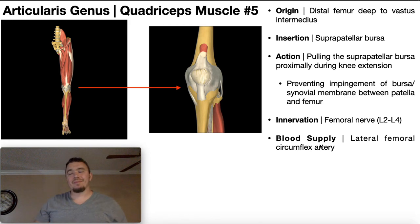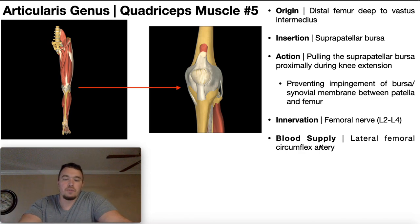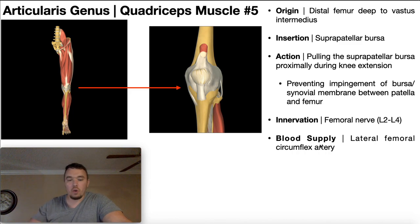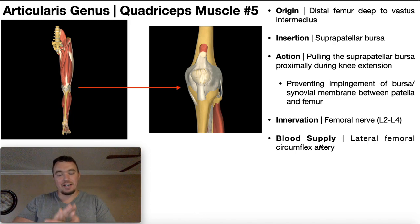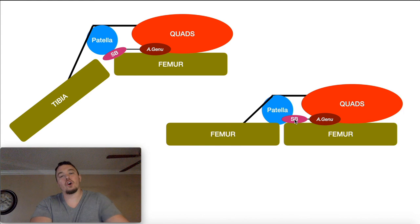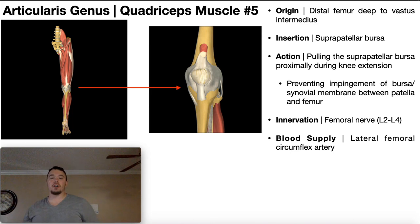To summarize: the four major quadriceps are responsible for knee mobility and extension. But during knee extension as we approach full extension at 180 degrees, we enter the closed-packed position where everything is tight. Without articularis genus, the suprapatellar bursa would become impinged underneath the patella. This muscle simply pulls that bursa proximally over a short distance, and that's all it takes to prevent impingement. Hopefully this video gave you a good understanding of articularis genus and where it fits in with quadriceps function.